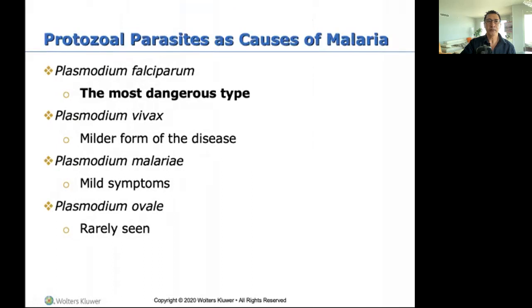Plasmodium falciparum is the most dangerous type of malaria. Going down the list there are milder forms with mild symptoms, rarely seen. But Plasmodium falciparum is what kills those half a million people.